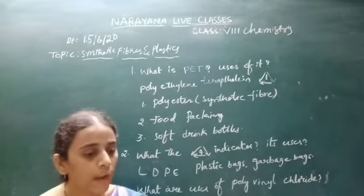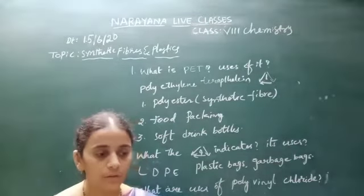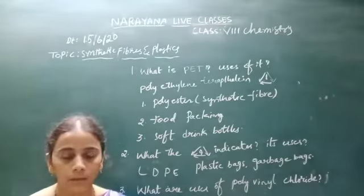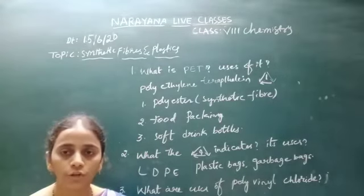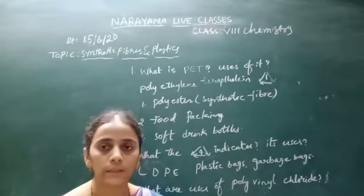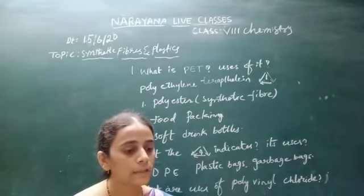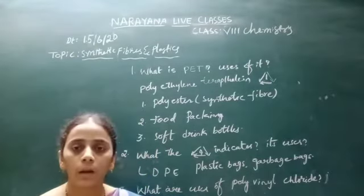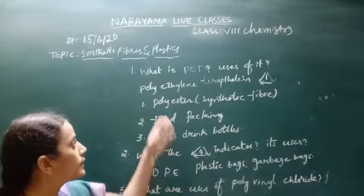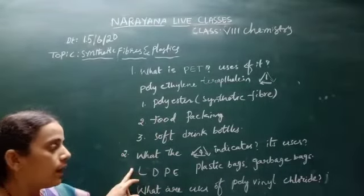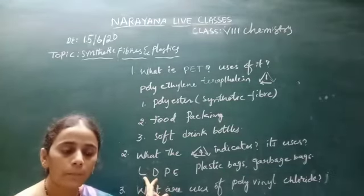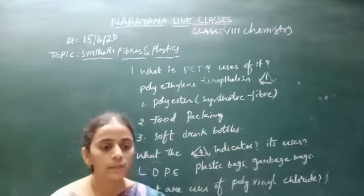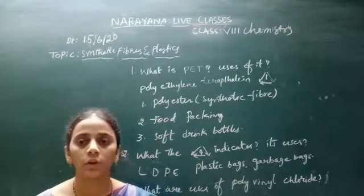The next blank: which plastic is used in the manufacture of pipes? PVC, code 3 plastic, is used in the manufacture of drainage pipes. The last blank: which plastic is used in garbage bags? The answer is LDP, code 4. So these are all the questions. Thank you, stay home stay safe.